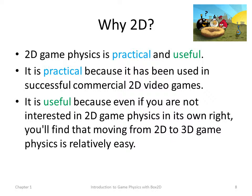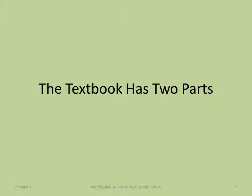Why concentrate on 2D game physics? Because it's both practical and useful. It's practical because it's been used in successful commercial 2D video games — you could learn this stuff, make a 2D video game, and make some money. It's useful because even if you're really interested in 3D game physics, moving from 2D to 3D game physics is relatively easy compared to going from 2D to 3D linear algebra.